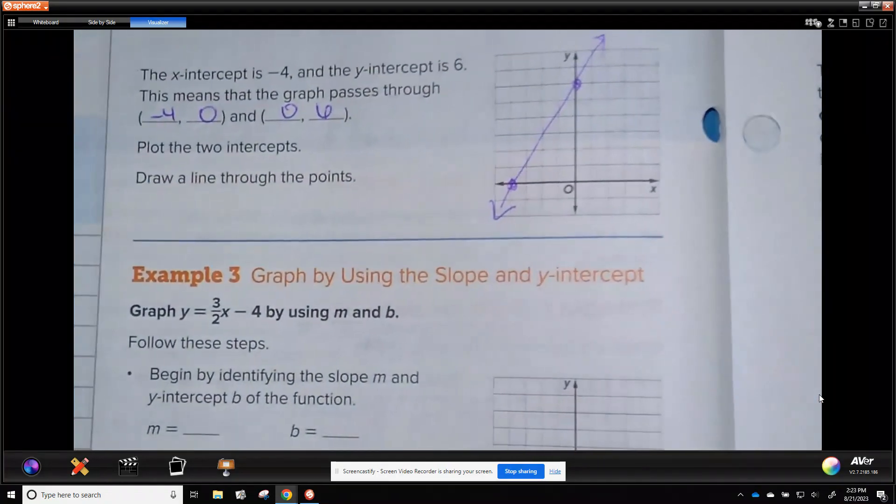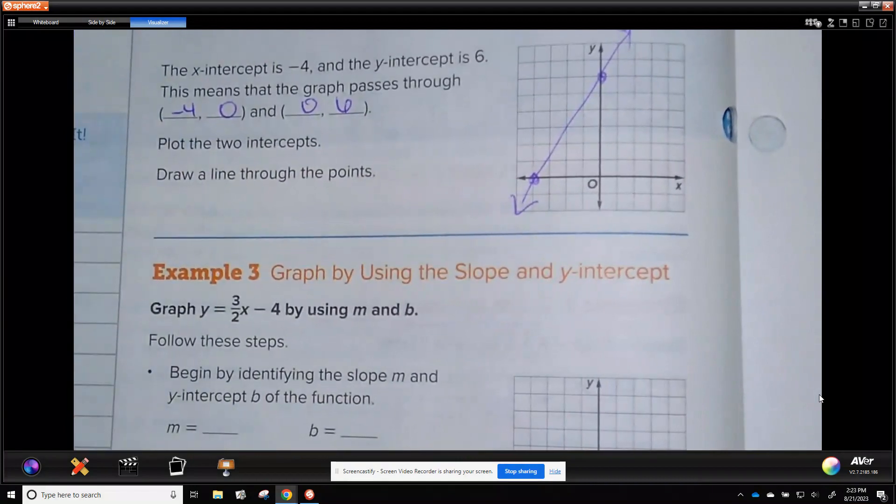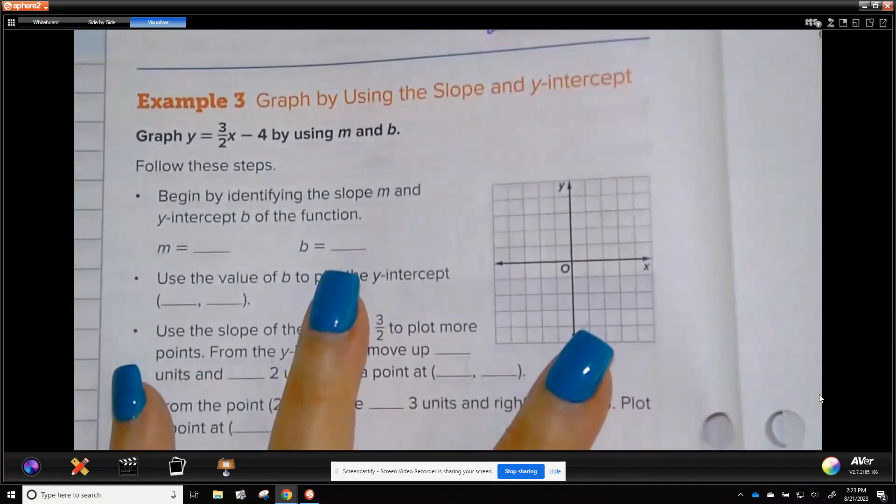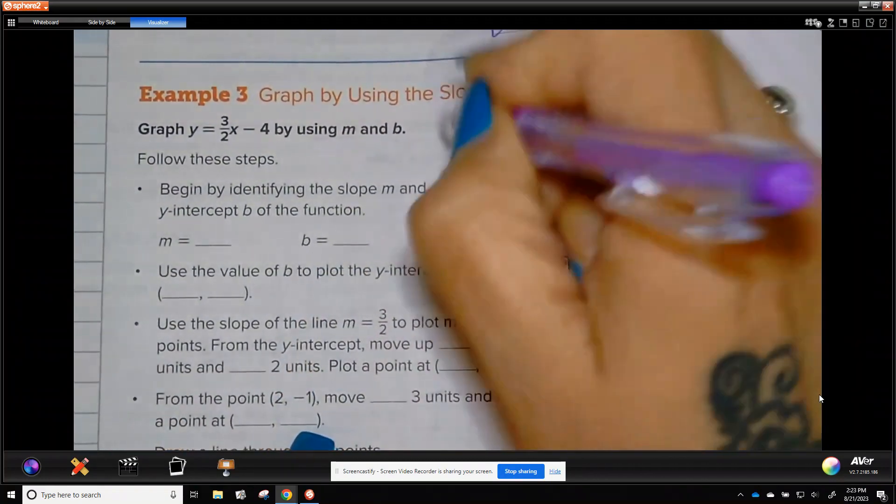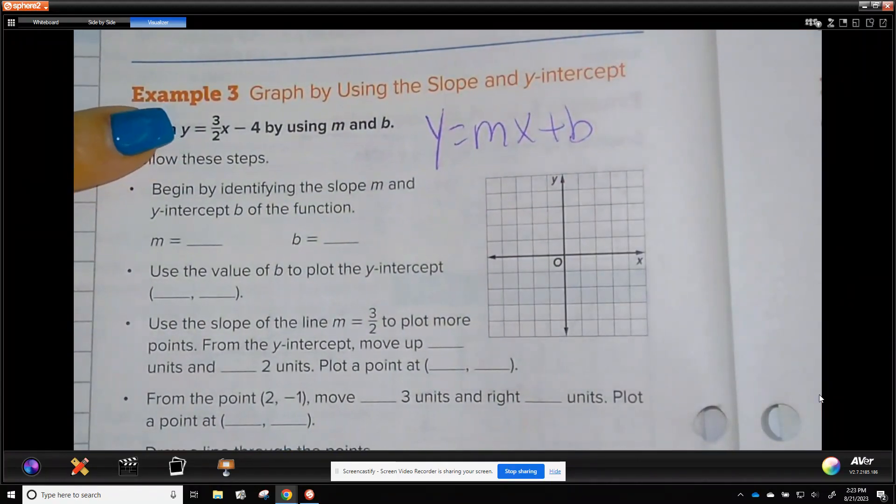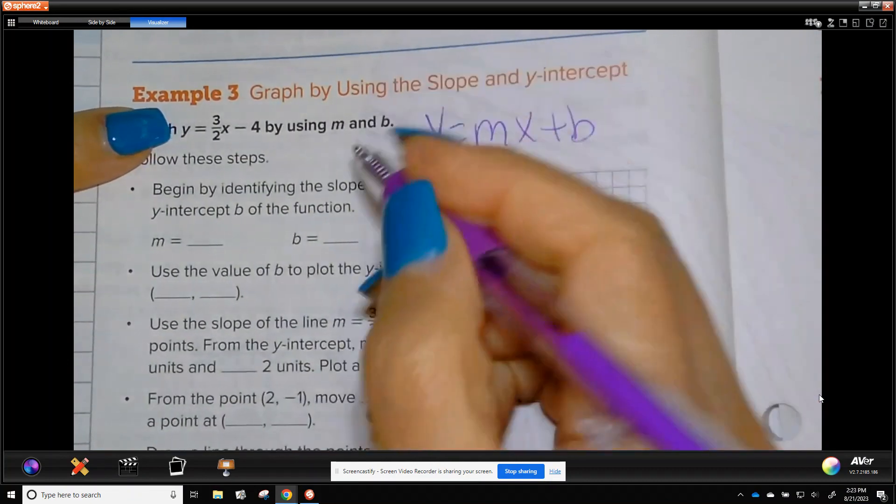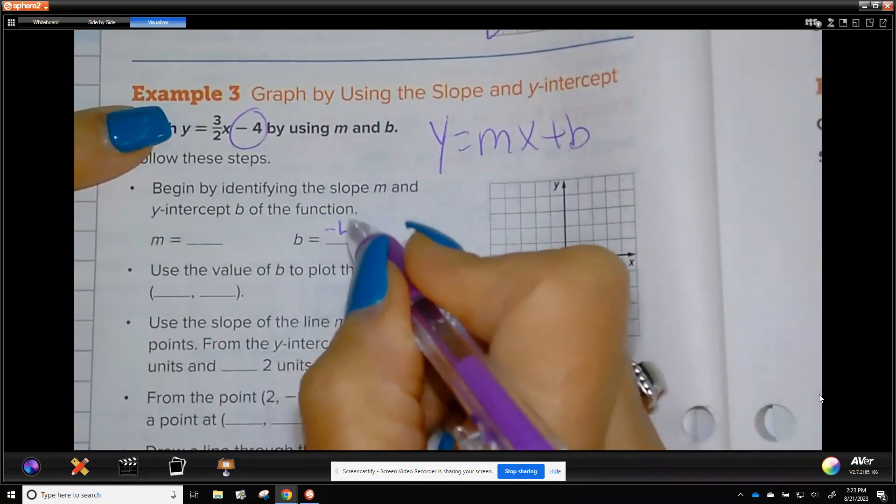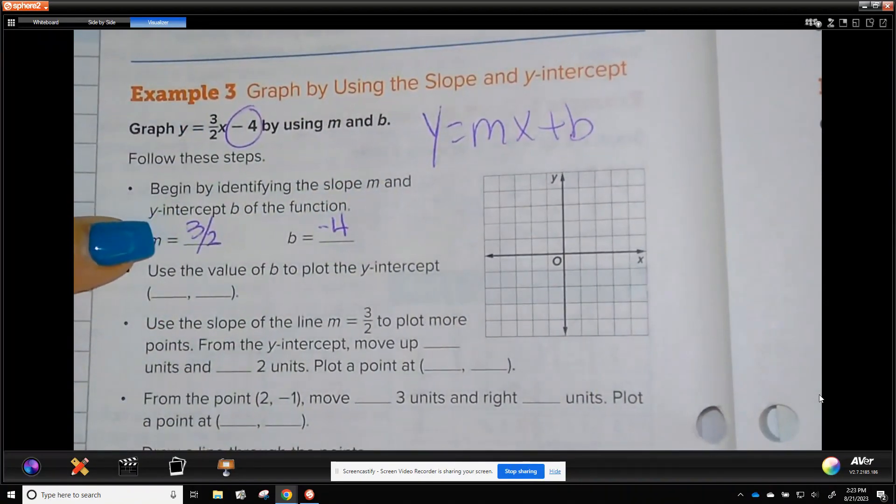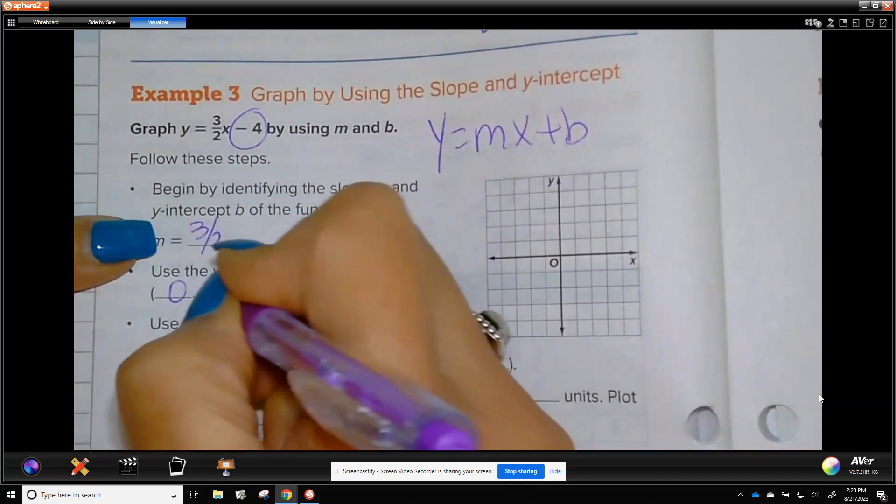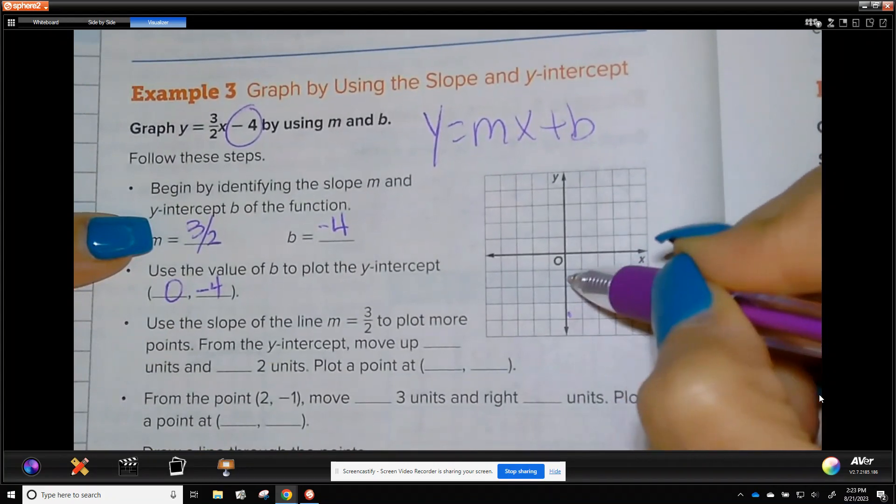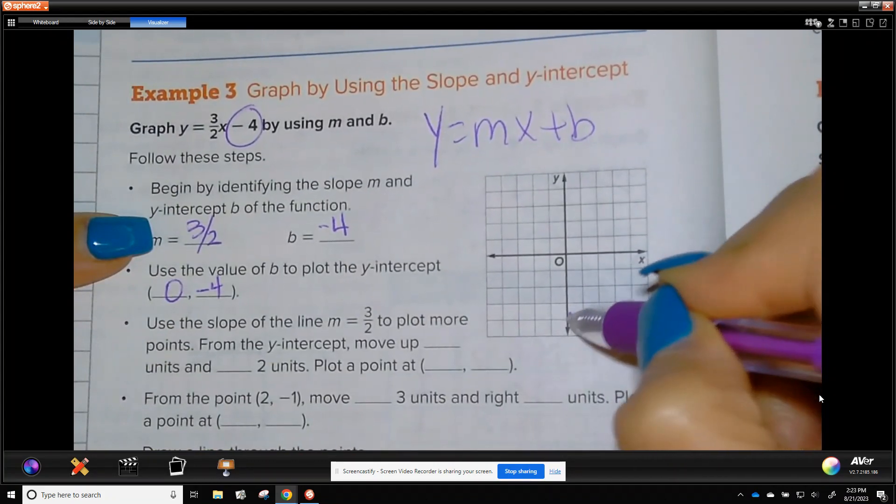So the last way they go through, so that's really great with standard form without having to get y by itself. Last thing is slope intercept form, which is y equals mx plus b. Here's one already written in that format. So your b is negative 4. Your m, which is your slope, is a positive 3 halves. So b starts on the y on negative 4. So you go to negative 4, 1, 2, 3, 4.